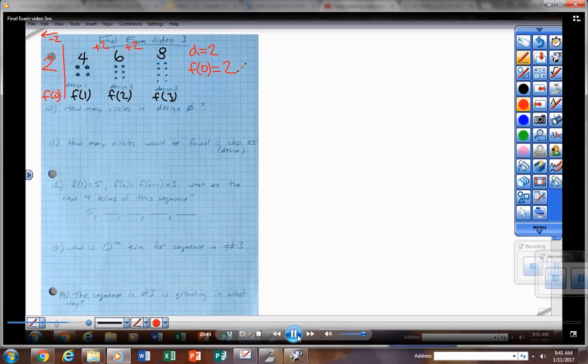So at the zero term it has to be two, and that makes sense because if you add two you get that very first term which is four. So that zero term going backwards would be two circles in that zero design. To find the 25th, or how many circles in the 25th, I'm going to use the explicit function and evaluate that for 25.